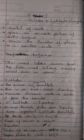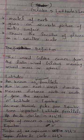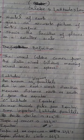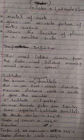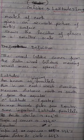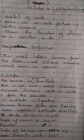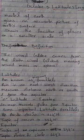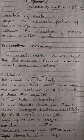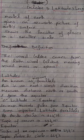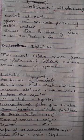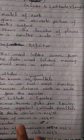Here are some important latitude parallels: Arctic Circle at 66.5 degrees North, Tropic of Cancer at 23.5 degrees North, Equator at 0 degrees, Tropic of Capricorn at 23.5 degrees South, and Antarctic Circle at 66.5 degrees South. The equator is located in the middle of the globe. The Arctic Circle and Tropic of Cancer are in the Northern Hemisphere, while the Tropic of Capricorn and Antarctic Circle are in the Southern Hemisphere.